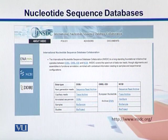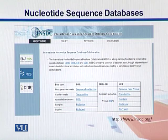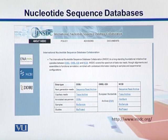Here is the page for INSDC. As you can see, all three collaborators' logos are there. If you look into the data, we can have next-generation sequence reads, capillary reads, and information about different samples and slides. We can get next-generation sequence data from this archive as well, which we will start working with as we go further in this course.